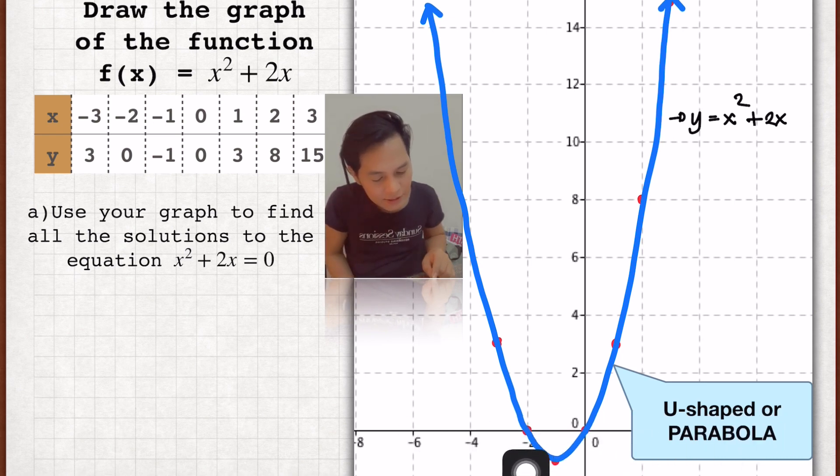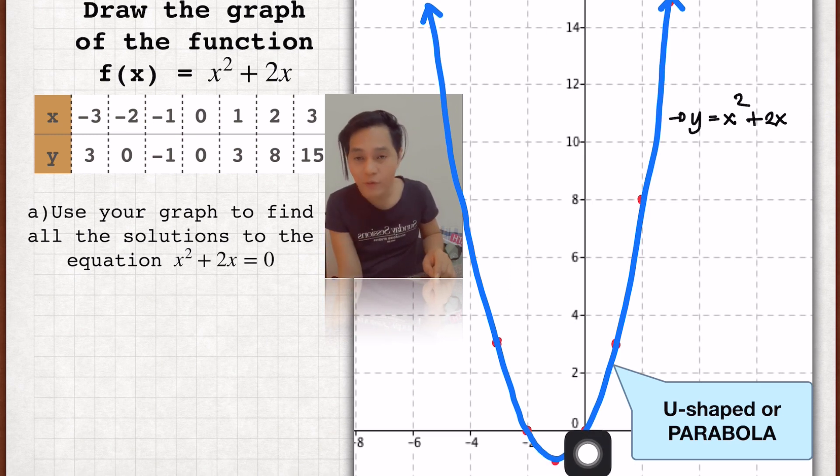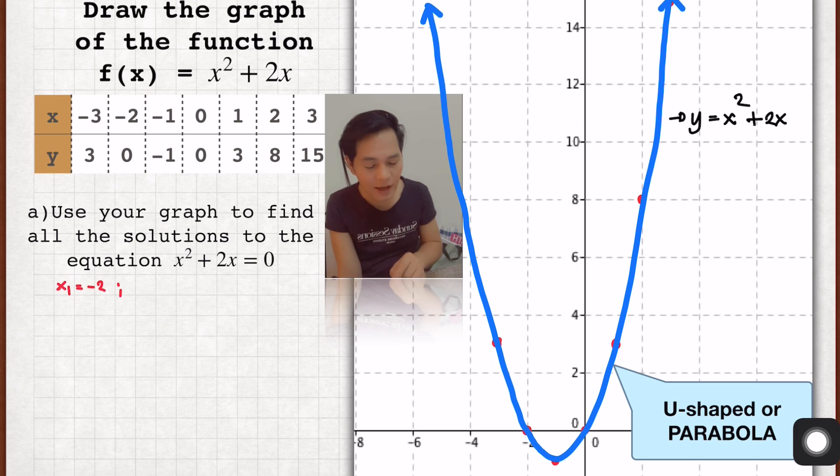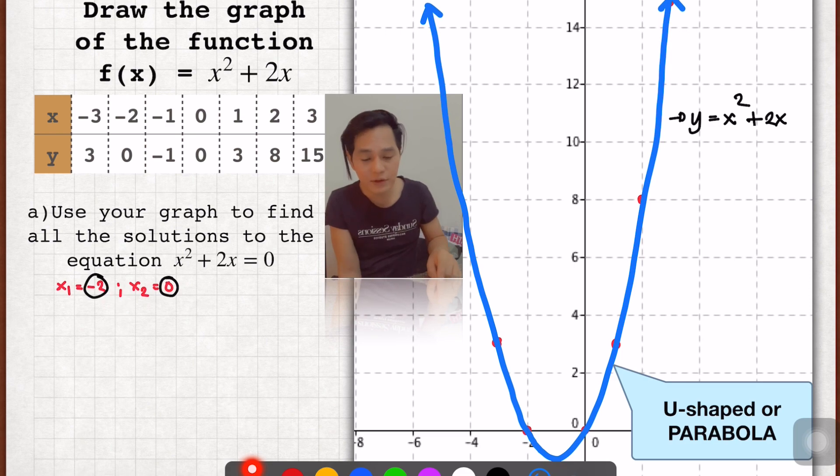What are these points? Look at this. This is negative 2 and 0. So therefore, x of 1, we have here negative 2, and x of 2 which is 0. These are the two solutions of the given quadratic function.